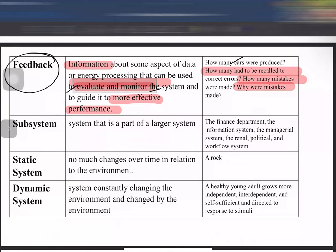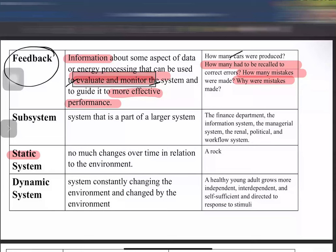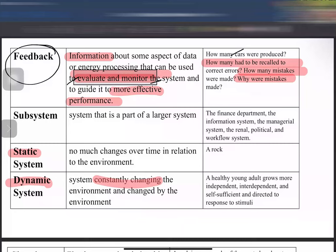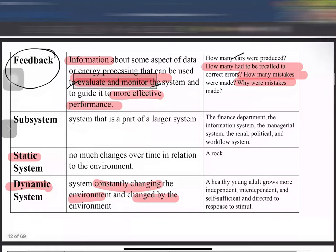A subsystem is a system that is part of a larger system — for example, the circulatory system and nervous system are each subsystems of the human body. A static system has little change, while a dynamic system is constantly changing and interacts with its environment — the system can change the environment, and the environment can change the system. In nursing informatics, your system from 2005 cannot be the same one used in 2015; we must upgrade. That concludes the overview of the general systems theory by Bertalanffy.